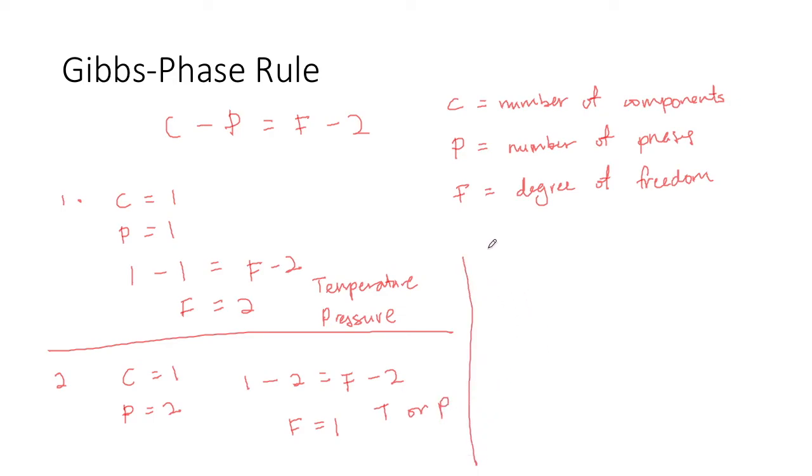Now the third scenario is, what if the system has two components at two phases? Then C would be 2, P would also be 2, and that would give us 2 minus 2 equals F minus 2, which means that F equals 2.